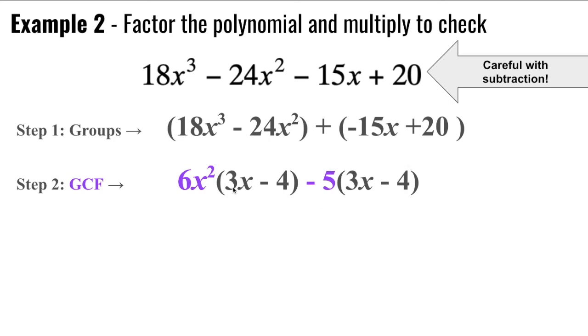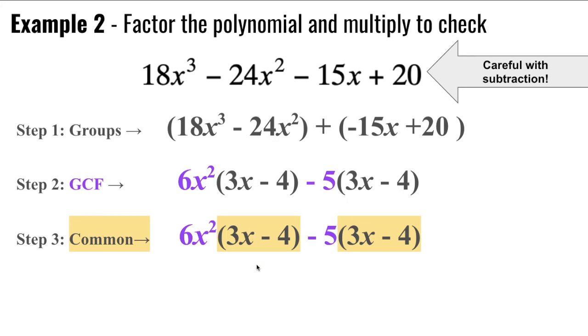Now, my third step is to make sure that I have something in common. And I do here. I have 3x minus 4 and 3x minus 4. Without that common binomial, I would not be able to go any further. Since I do have that binomial in common, I can finish my factored form, grabbing my two greatest common factors and multiplying them by the second common binomial.